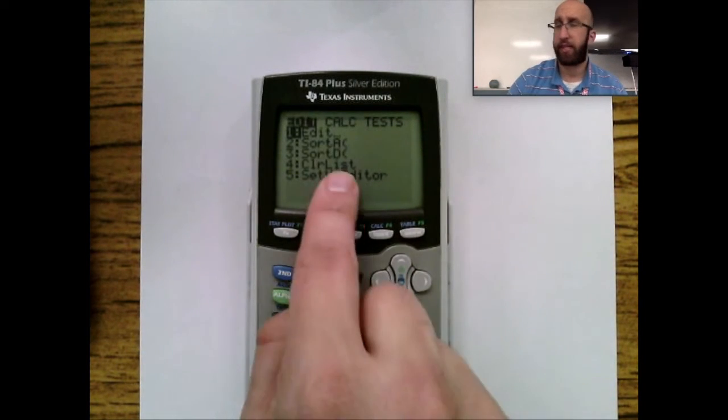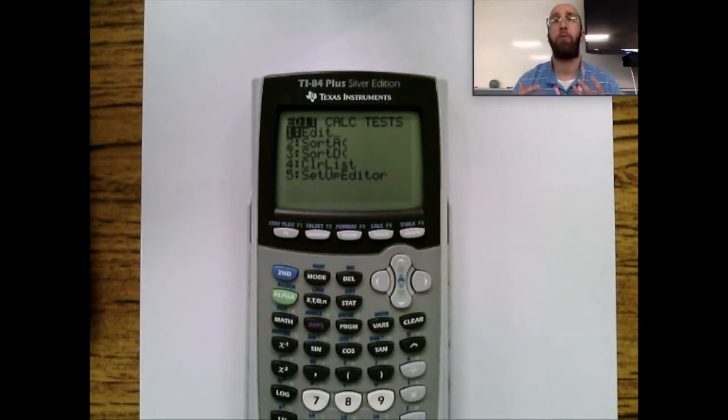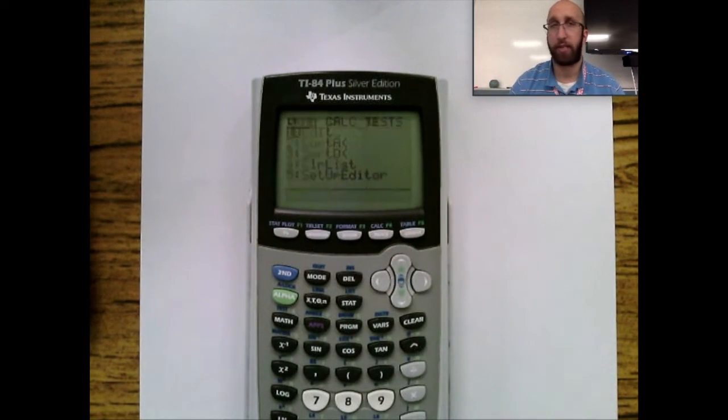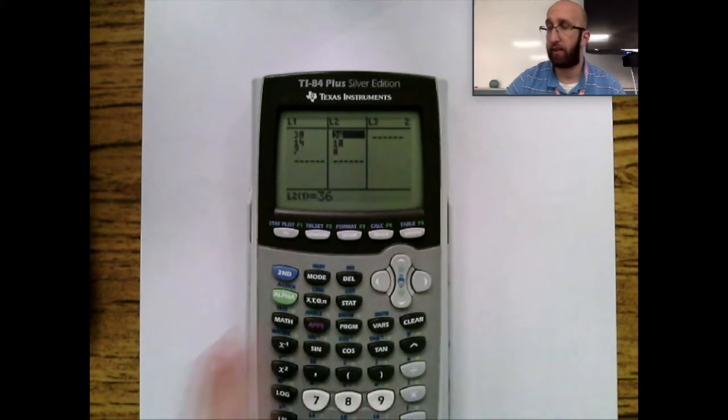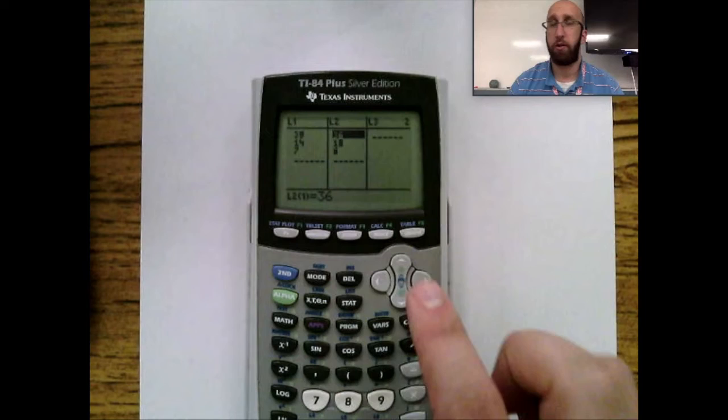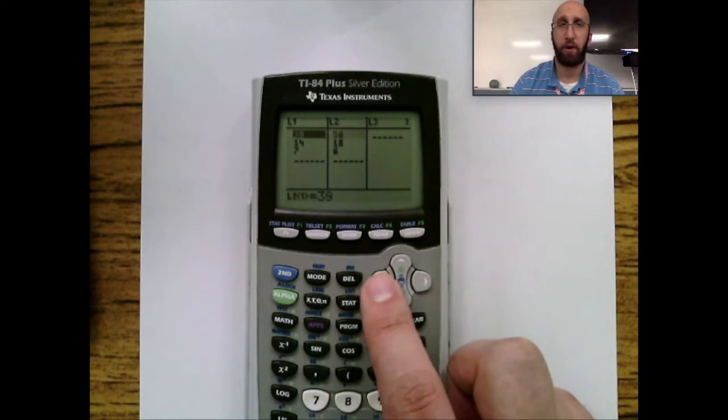The most important thing under Edit is really this Edit List. In this Edit List, you could type in data sets in List 1, List 2, List 3. You could type in a whole bunch of data sets. If you already have data there, how you clear out that data is you're going to highlight the name of the list.